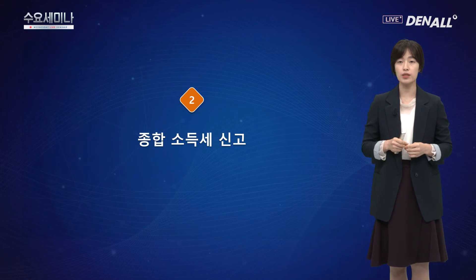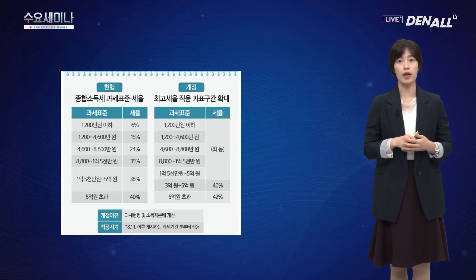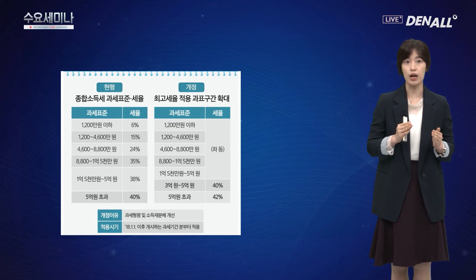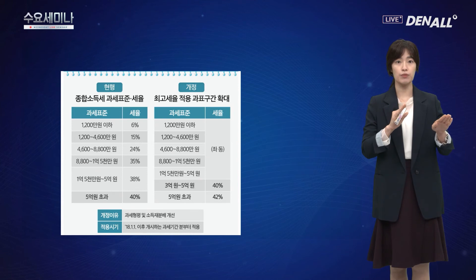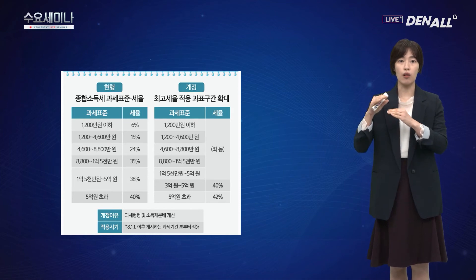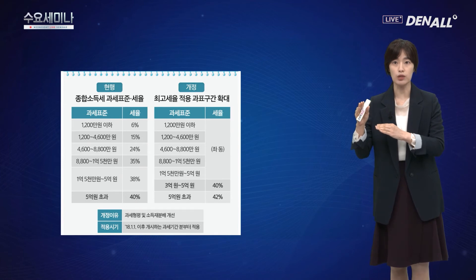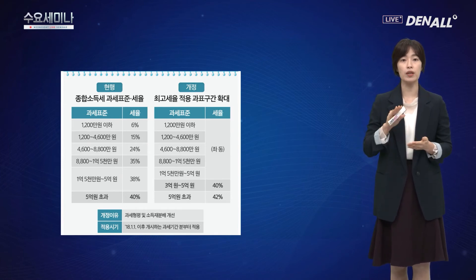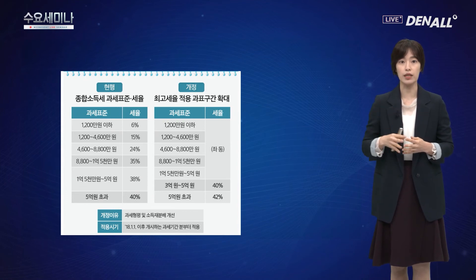두 번째로 종합소득세 신고에 대해 알아보겠습니다. 종합소득세 신고는 5월에 이루어집니다. 2018년도까지의 과세표준 비율에서 개정이 이루어졌고, 세율 구간이 더 세부적으로 나뉘어지고 고액에 대한 세율이 높아졌습니다. 과세표준 3억에서 5억 사이인 경우 40%, 5억 초과 시 42%로 과세세율이 늘어났습니다.